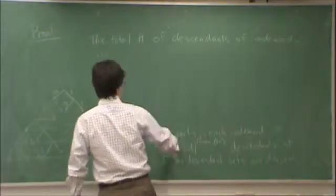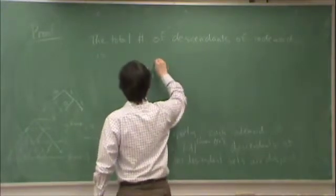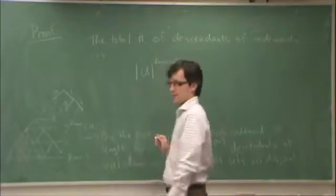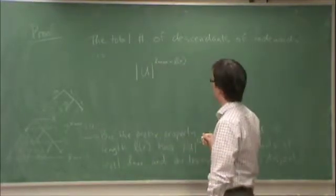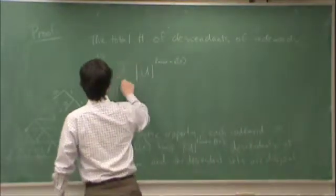So for any codeword, the number of descendants is cardinality u to the Lmax minus Lmax. So the total number of all of the descendants of all of the codewords is just the sum of these.